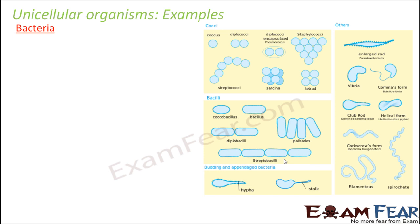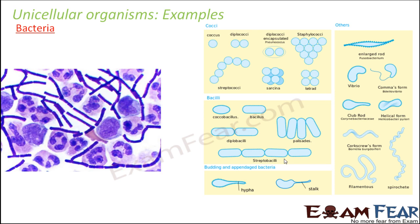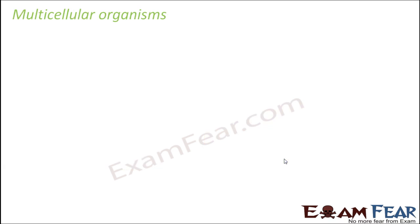The most important unicellular organisms are bacteria. They come in a variety of shapes and sizes. They are considered amongst the first life forms on earth, and it is said that all other life forms evolved from bacteria. You find them in a number of places — in water, soil, and inside the bodies of plants or animals.